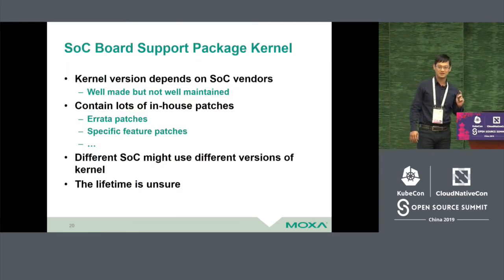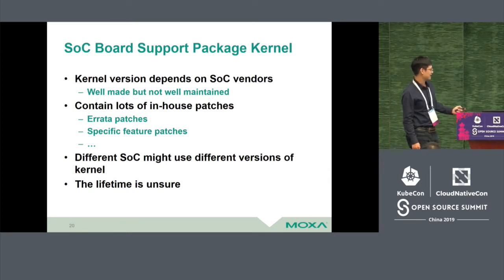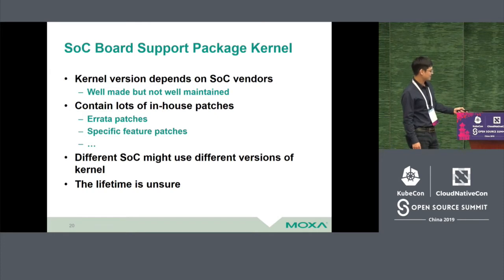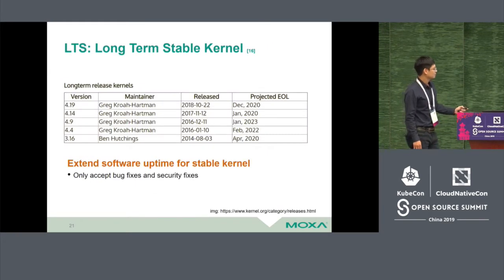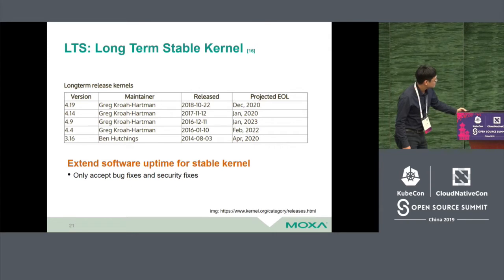Once we decide the type of kernel, we have to obtain it. The first source is the SoC Board Support Package (BSP) kernel provided by the SoC vendor. Using that kernel causes issues — different SoCs might use different kernel versions, meaning if we have more than 10 SoCs we might maintain 10 versions of the kernel simultaneously, and the lifetime is unsure. So let's look at the LTS long-term stable kernel — Greg Kroah-Hartman maintains five kernel versions here, with the longest support period being about six years.